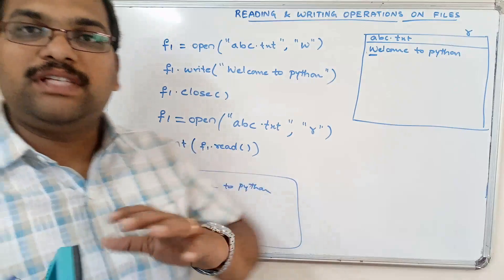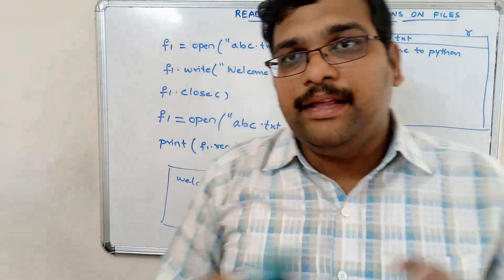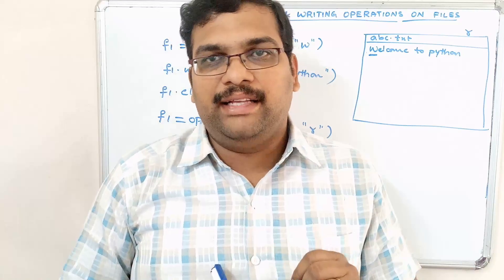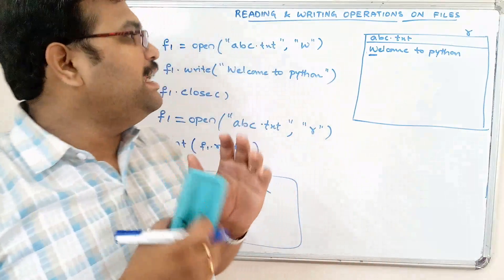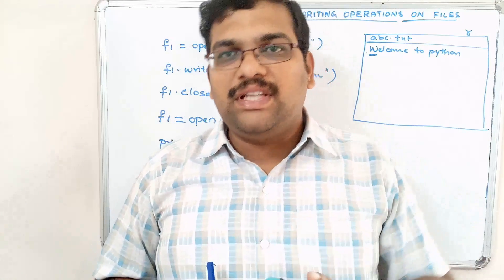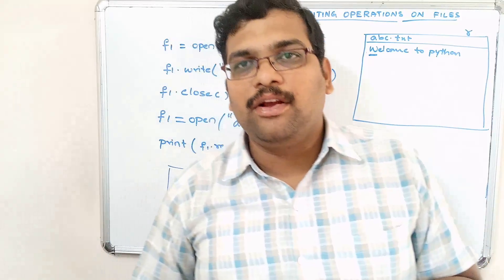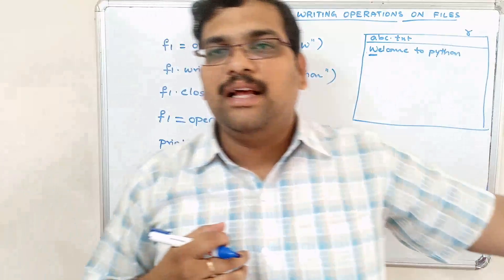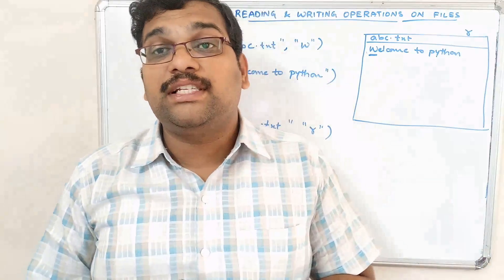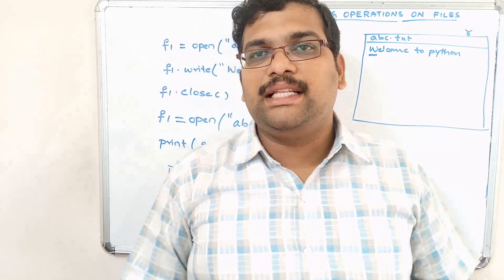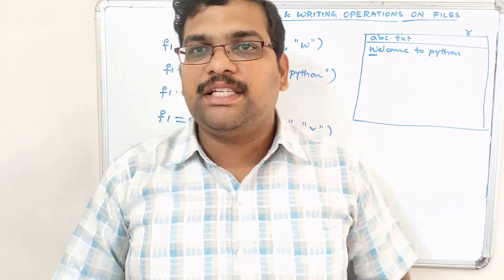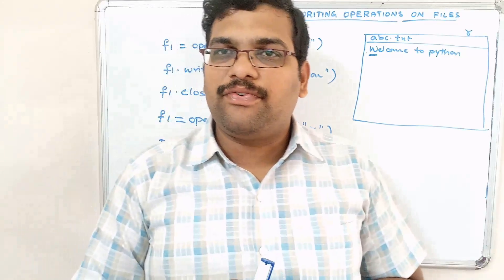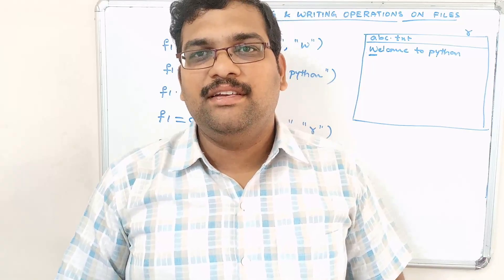Let us stop here. In this session we have seen reading and writing operations on files — specifically the write() and writelines() functions, and the read(), readline(), and readlines() functions. The key important thing is the position of the file pointer: unless you close the file, the pointer never returns to the beginning — it keeps moving from the start towards the right. If you have any doubts regarding Python programming, post them in the comment section. Please like, share, and subscribe to our channel. Thanks for watching.